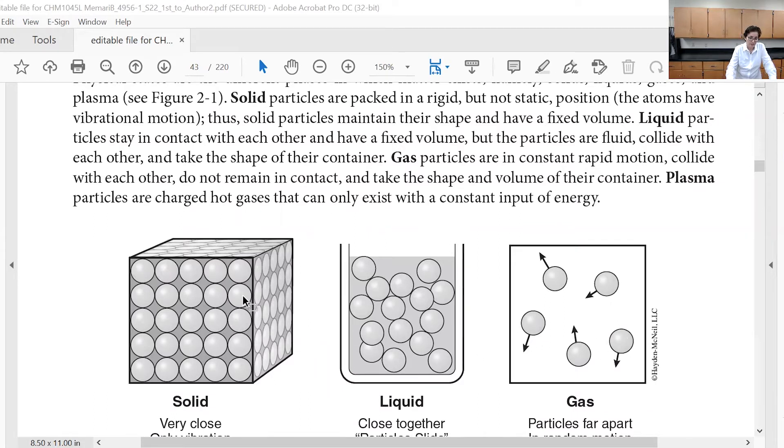Solid - the molecules or particles are close to one another, limited space, very little space between the molecules, no space. And for the liquid, molecules are moving around, or ions, they are moving around, and there is space between them.